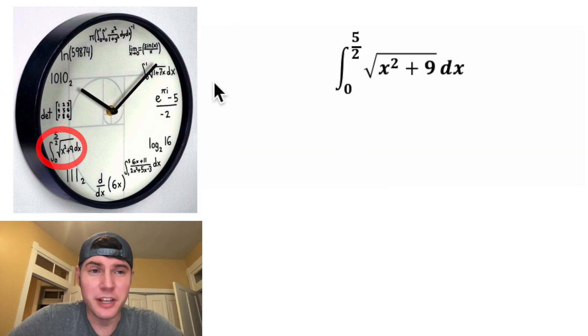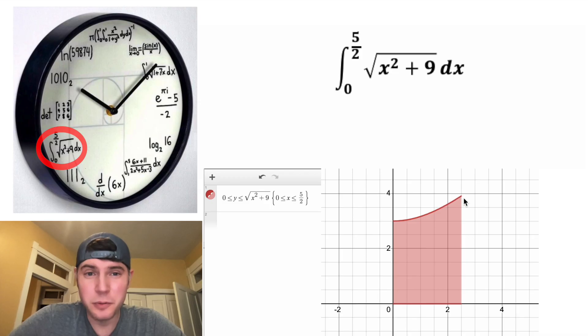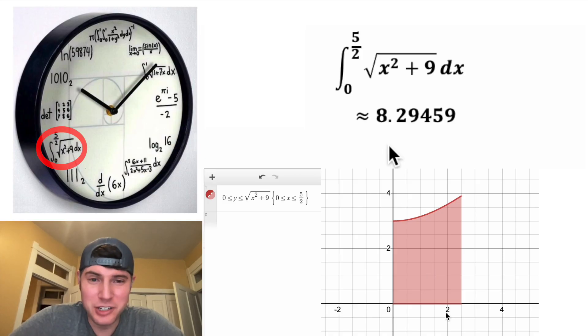Next, we have another integral for the eight o'clock hour. This is what this one looks like in Desmos. This two by four rectangle would be equal to eight. So you can see how this is approximately equal to eight. And once again, it's an approximation, 8.29459. And that's supposed to represent the eight o'clock hour.